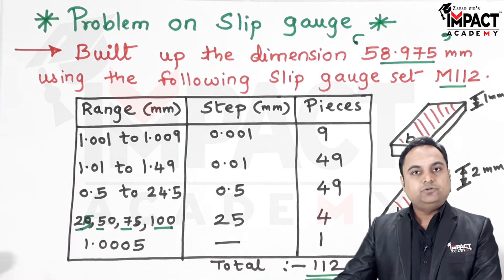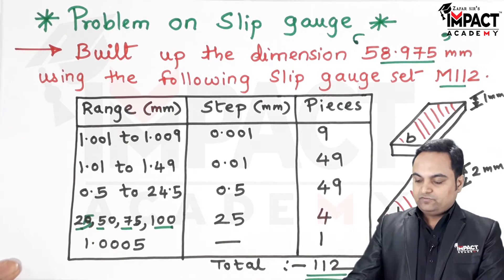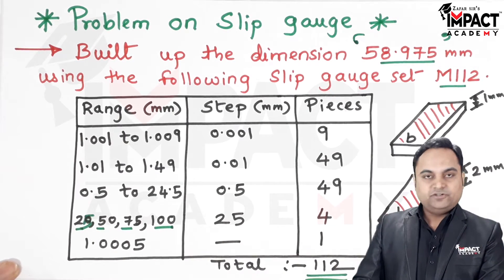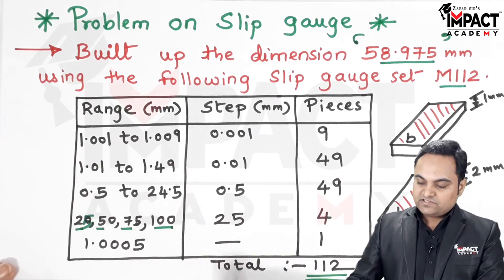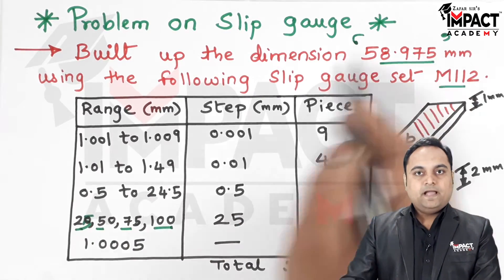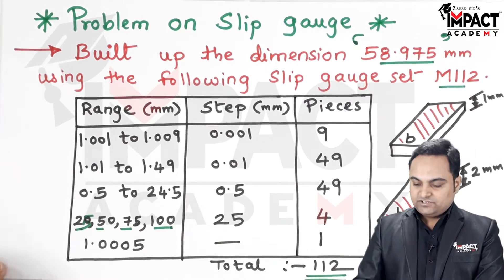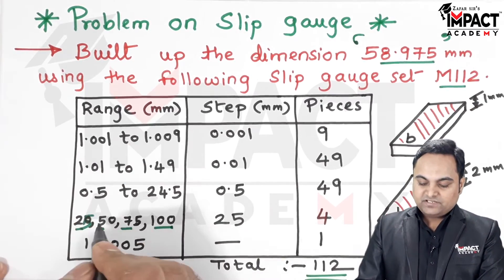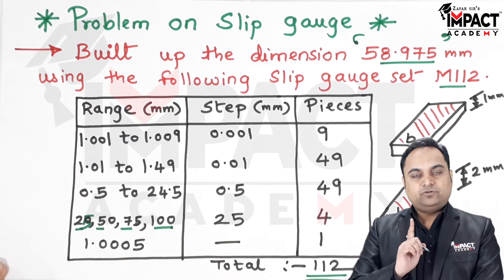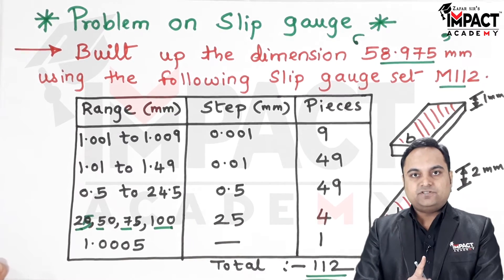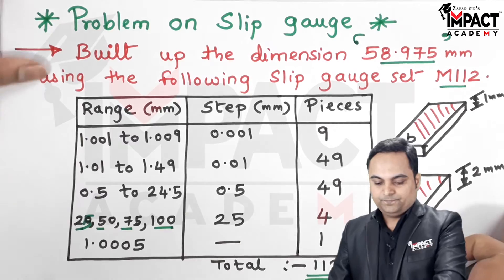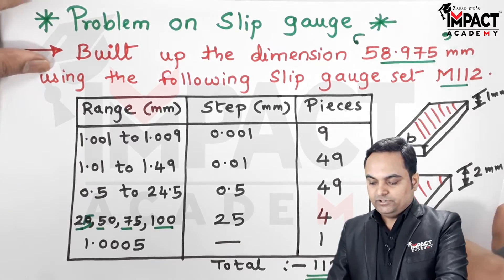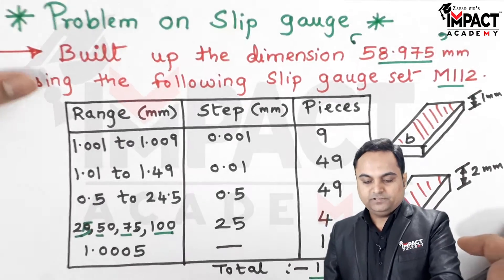When we add up all the pieces, the total comes out to 112, which is why it is called the M112 set. The condition is that from each range we must select only one slip gauge.